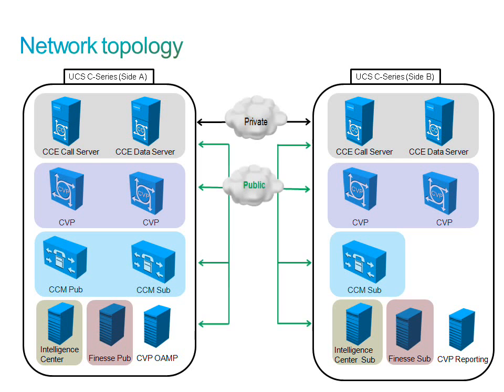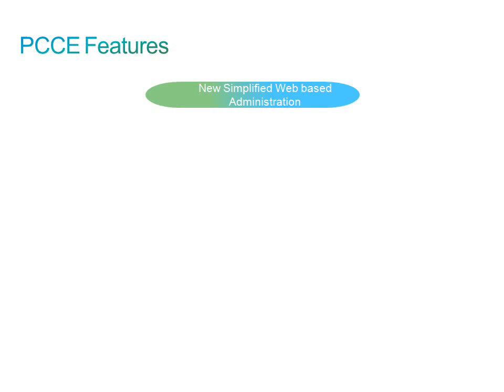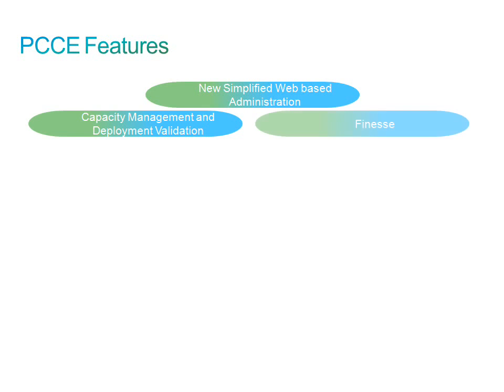The public network is used for all normal communications between the solution's other components. Package CCE is a fairly comprehensive contact center solution. The following features are available on the UCSC-260 with no need for sizing. These include a new web-based administration tool that streamlines the CCE administration process by reducing the number of steps required and focusing on usability. Also included are capacity management and deployment validation, Finesse (the new web-based agent desktop), and outbound option for campaign dialing.